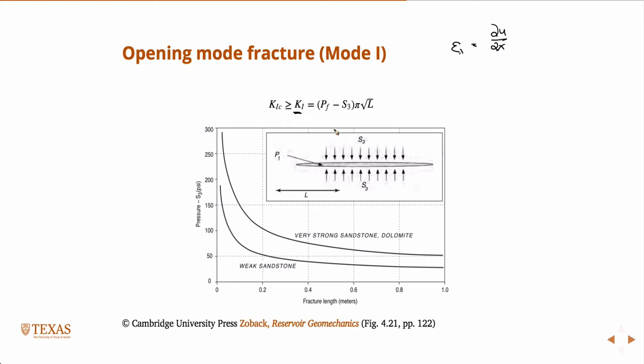So here, we typically use the symbol K, and the 1, K1, represents that it's an opening mode fracture. So we can have three different types of modes. We can have a crack that opens, like this. That's the one that we typically induce when we're doing hydraulic fracturing. But you can also have a sliding mode, and you can also have a shear mode, like this. And so if I were to take a crack and pull on it like that, that would be shear. So that's mode one, two, and three.